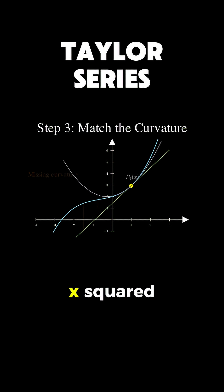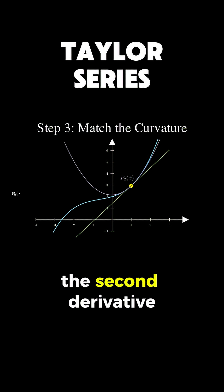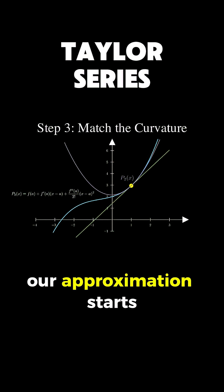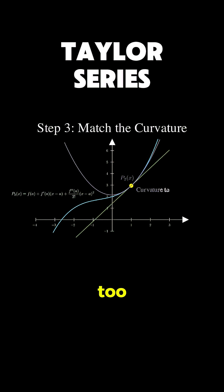When we add a term with x squared that accounts for the second derivative, our approximation starts matching the curvature too. See how the purple parabola hugs the blue curve over a much wider range. We're now matching the value, the slope, and the curvature all at once. Each piece of information we match, each derivative, extends the range where our polynomial approximation stays close to the true function.